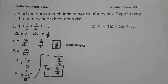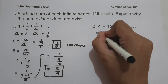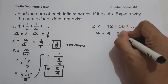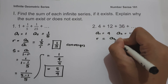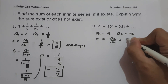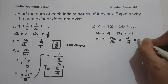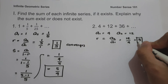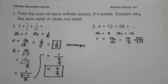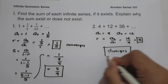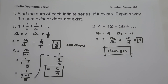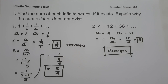On example number 2, we have 4 plus 12 plus 36 up to infinity. The first term is 4 and the second term is 12. The common ratio is 12 divided by 4, which equals 3. Since our common ratio is greater than 1, the series is diverged. Therefore, the sum cannot be determined because the common ratio is greater than or equal to 1.